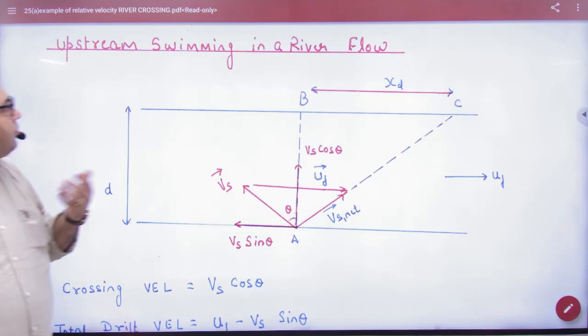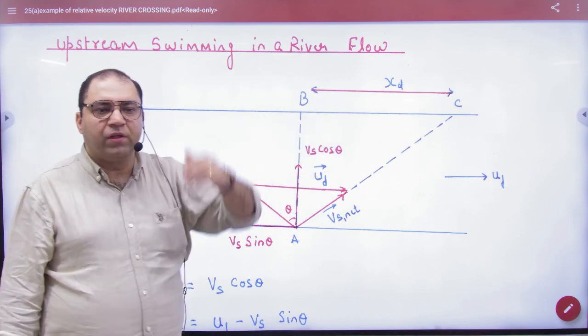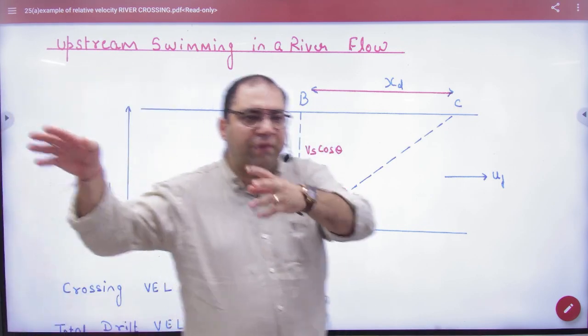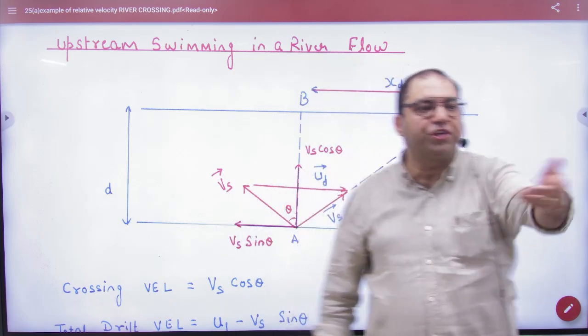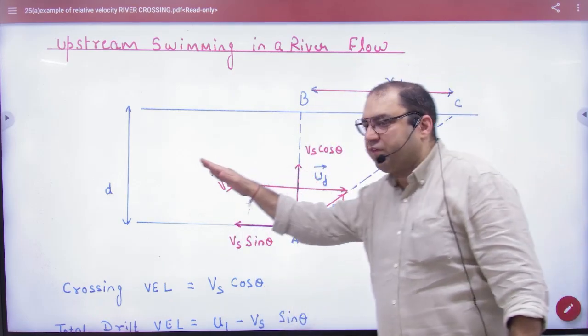Last part is upstream swimming in a river flow. The river was like this. But what did this person do? He did not jump with the ground. He did opposite to the flow. He started to jump like this.